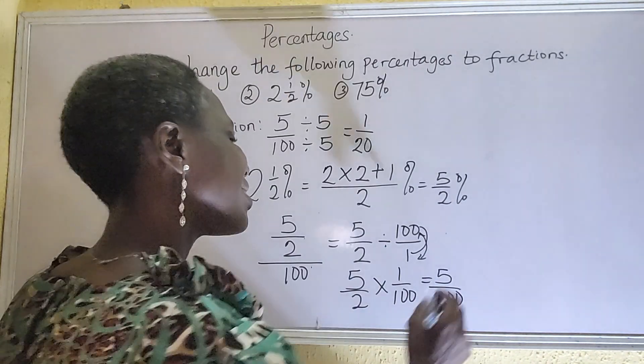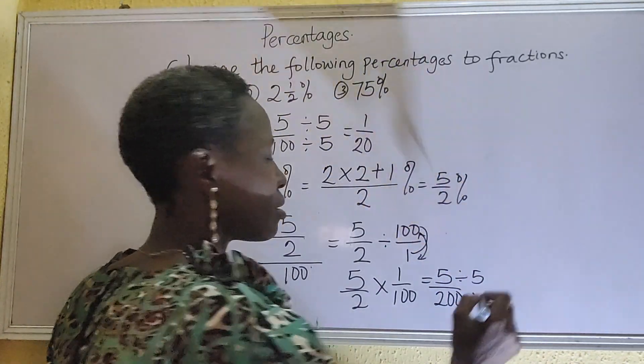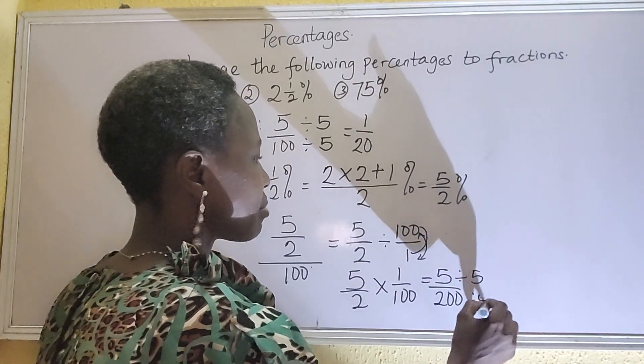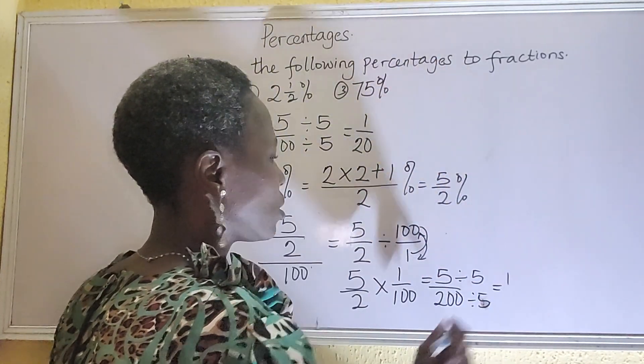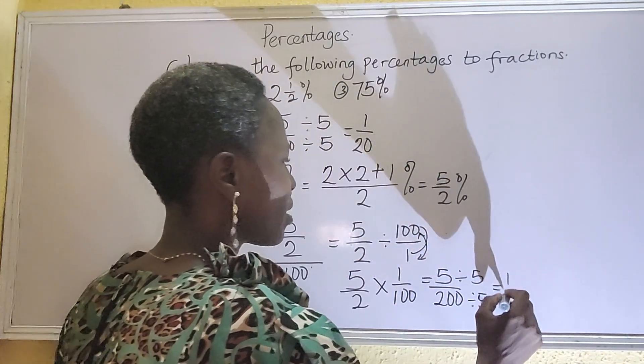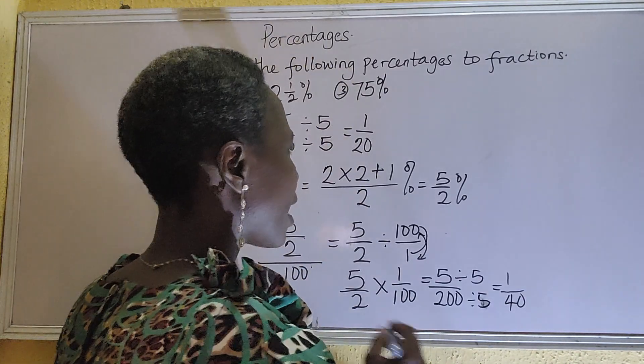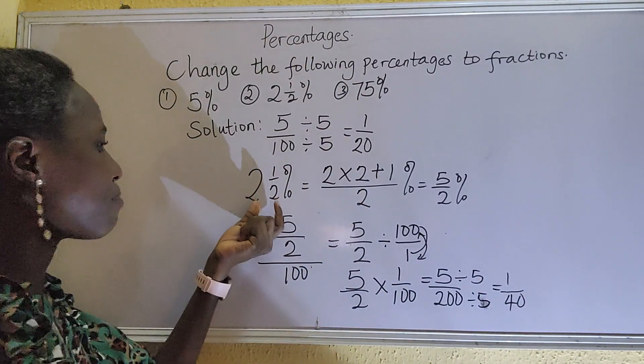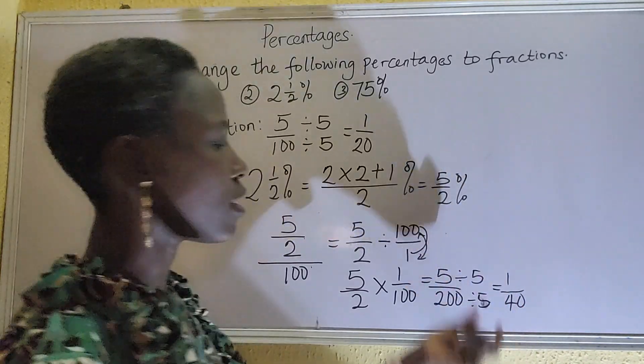At this stage we are close. You know our usual, we reduce to the lowest term. That should be 5. So 5 divided by 5 that's 1, 20 divided by 5 that's 4, and zero. So our answer, 2 and a half percent to fraction is 1 over 40.